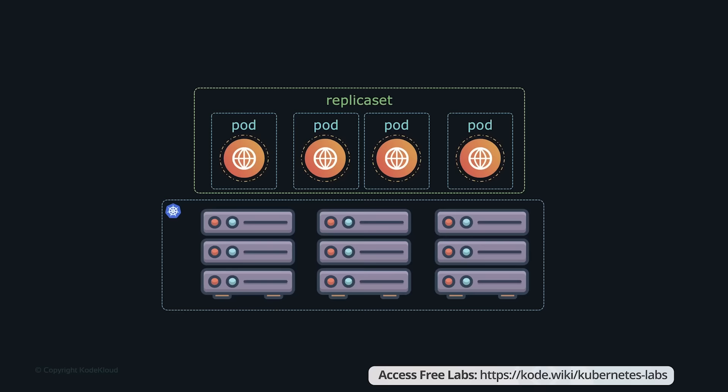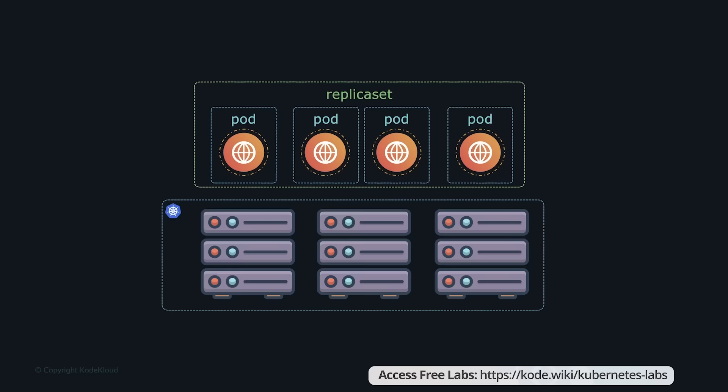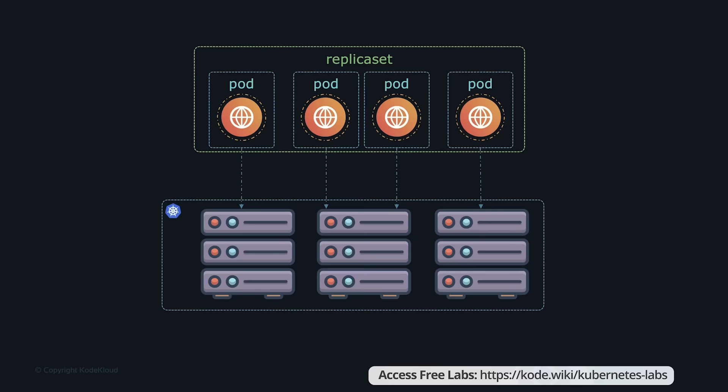A pod has a one-to-one relationship with a node — a pod can only run on one node at a time. You cannot move a running pod from one node to another; you'll have to kill it and recreate it. The scheduler decides which node a pod gets assigned to. A pod lives on one node, a replica set spans across the entire cluster, and a replica set can deploy a pod on any node. It monitors the number of pods and ensures enough are deployed at all times.